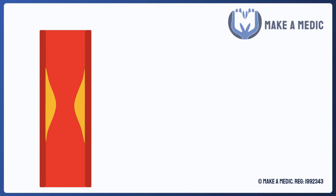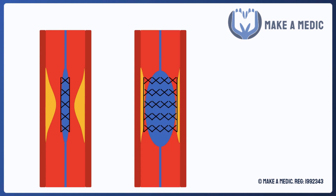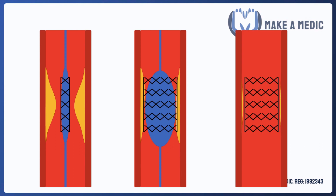Looking at what stenting actually looks like: here we have a coronary artery with some atherosclerosis causing a narrowing. Stenting involves passing a catheter into the coronary artery of interest, deploying the balloon, and then removing that catheter whilst leaving the stent in place. That stent helps maintain the patency of the coronary artery, thereby preventing ischaemia and infarction.